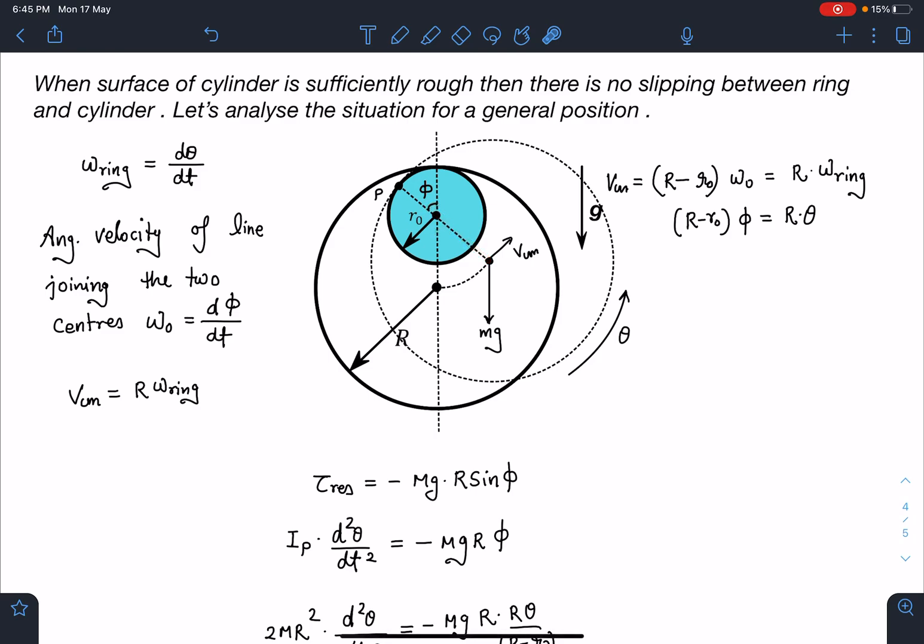So this angle is φ. So dφ/dt will be the angular velocity of this line joining the two centers. So since this point is fixed here, I can write its VCM as (R - R0)ω0, where ω0 is angular velocity of line joining the two centers.